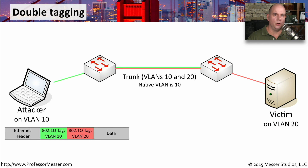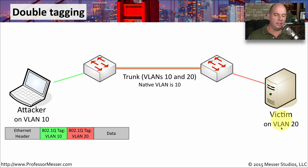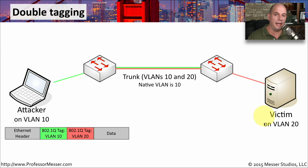Let's look at how this VLAN tagging would work. I've created a simple network diagram. On one side is our attacker, who is on VLAN 10. In the middle are two switches, and between these switches is a trunk connection carrying VLAN 10 and VLAN 20. The native VLAN on this trunk is VLAN 10. There's also a separate connection to our victim, who is on VLAN 20. The goal of the attacker is to jump from VLAN 10 to VLAN 20 to communicate directly to the victim, even though there's no router in the middle.